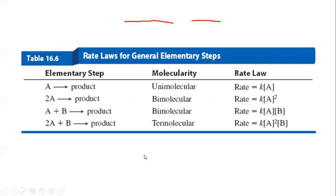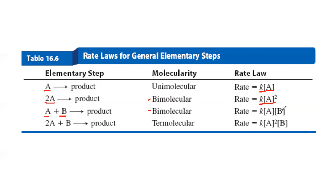There are four common elementary steps. We have a unimolecular step involving just one reactant molecule — the rate law is rate = k[A], which is first order. Then we have two types of bimolecular steps. One involves two molecules of the same reactant, giving rate = k[A]², a second-order reaction. Another type is A + B, giving a rate that is first order in A and first order in B, but second order overall. We can write rate laws for elementary steps because they deal with individual molecules.